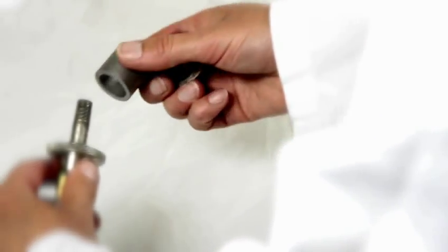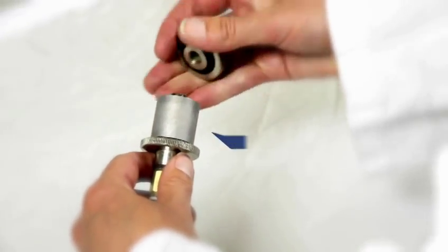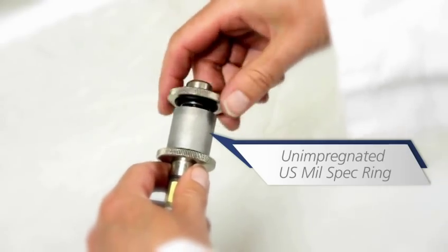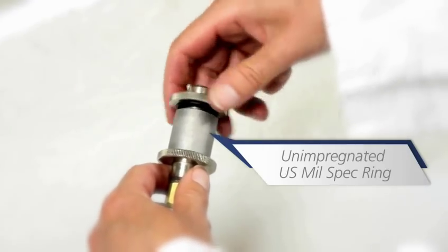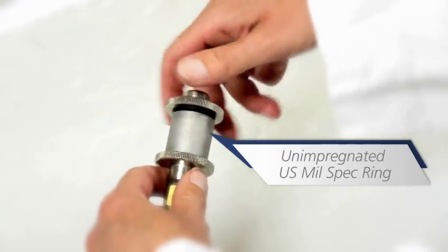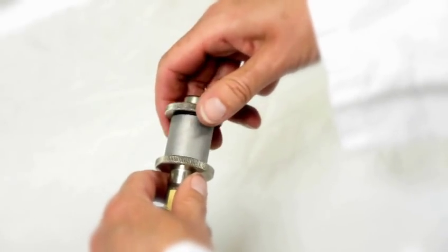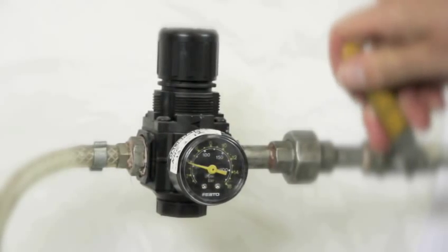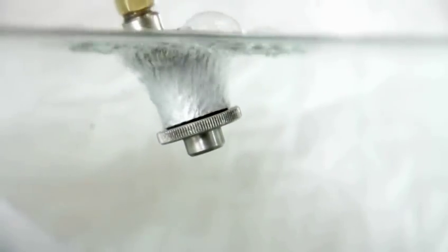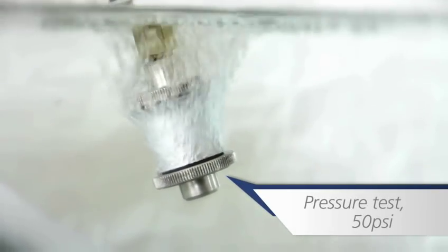In this demonstration, we can see the testing of a porous US military standard unimpregnated test ring and the benefits of Ultraseal's impregnation sealants. When submerged in water, it's clear to see how porosity can cause casting to leak, the imperfections allowing air to leak through the part.